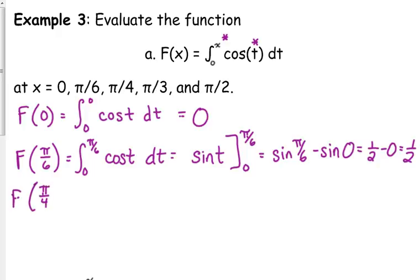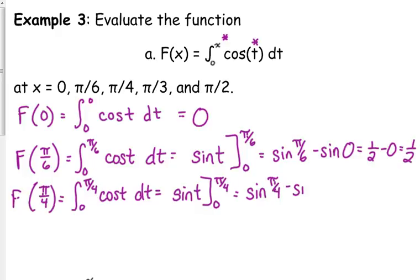Let's do F of π over 4. So it's the integral from 0 to π over 4 of the cosine of t dt. The anti-derivative of cosine is sine. We're evaluating that from 0 to π over 4. So the sine of π over 4 is the square root of 2 over 2. The sine of 0 is 0.